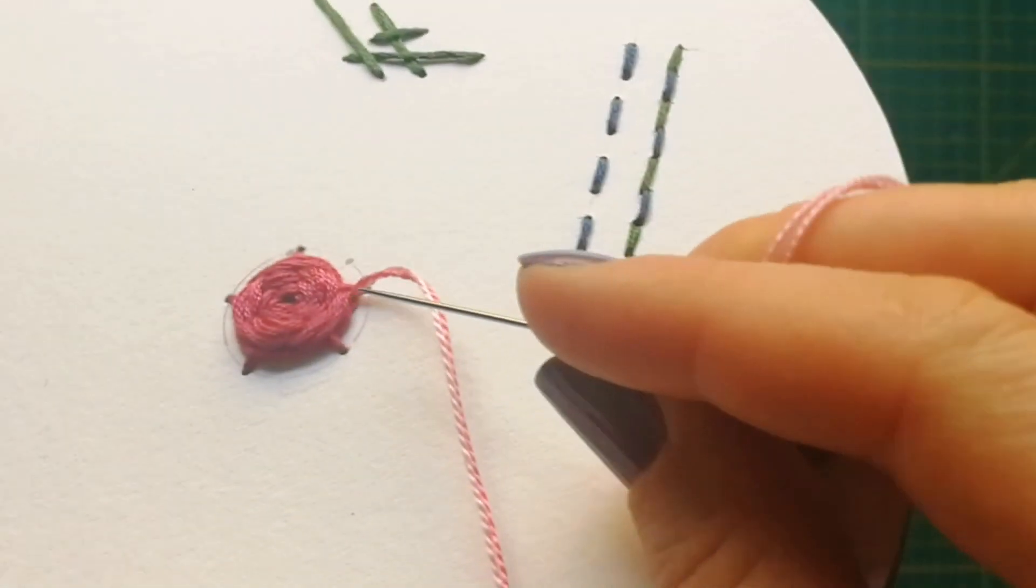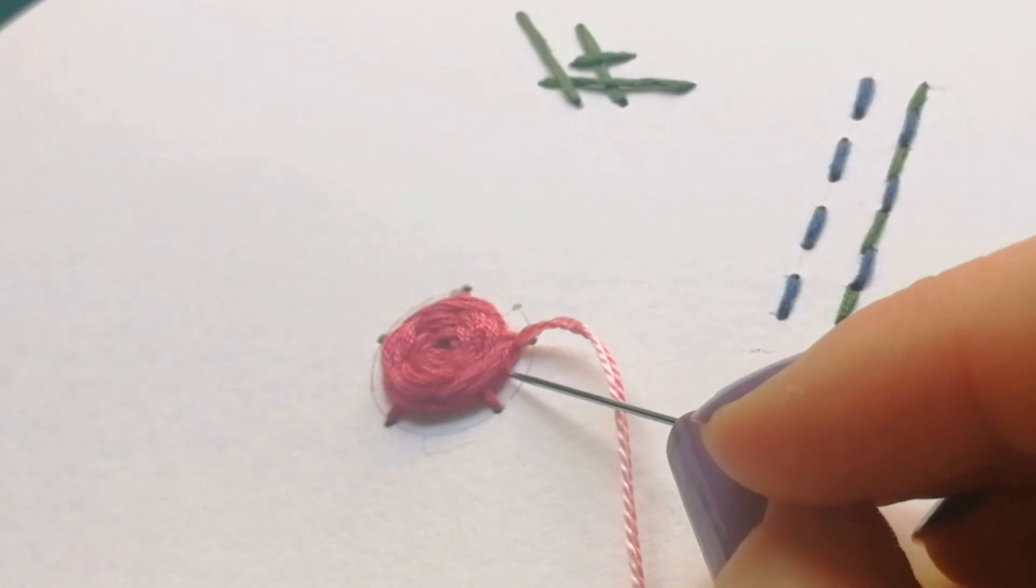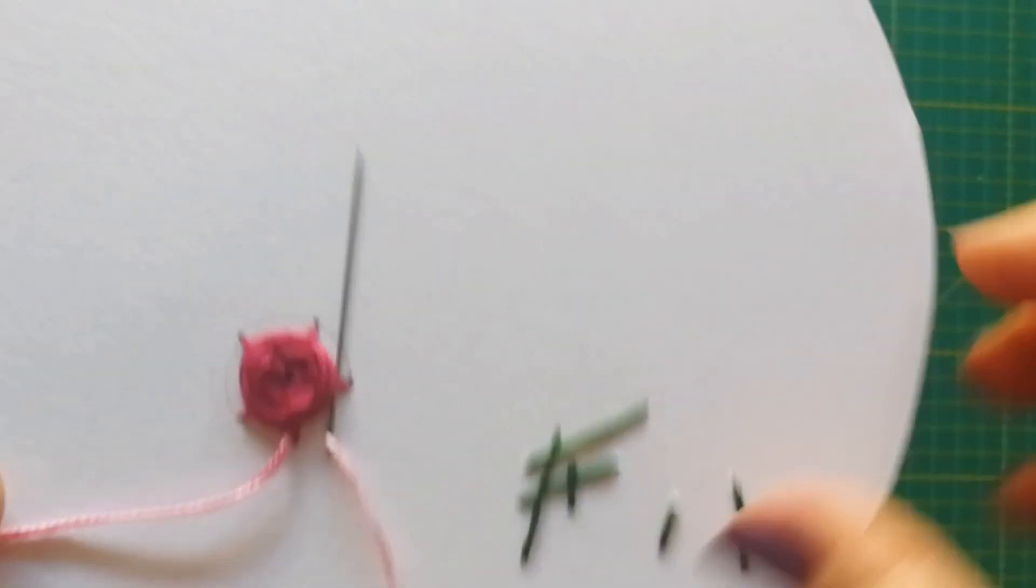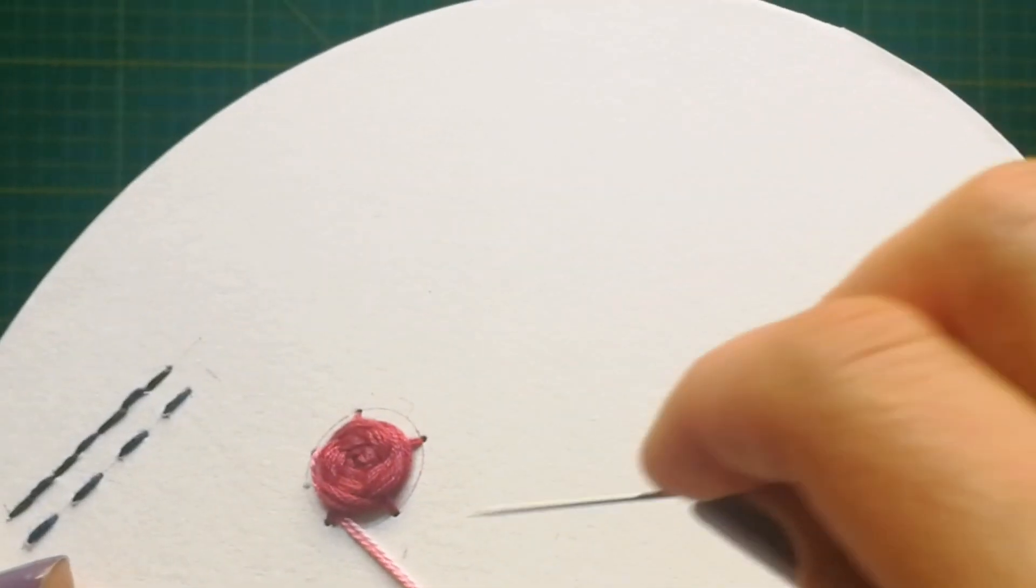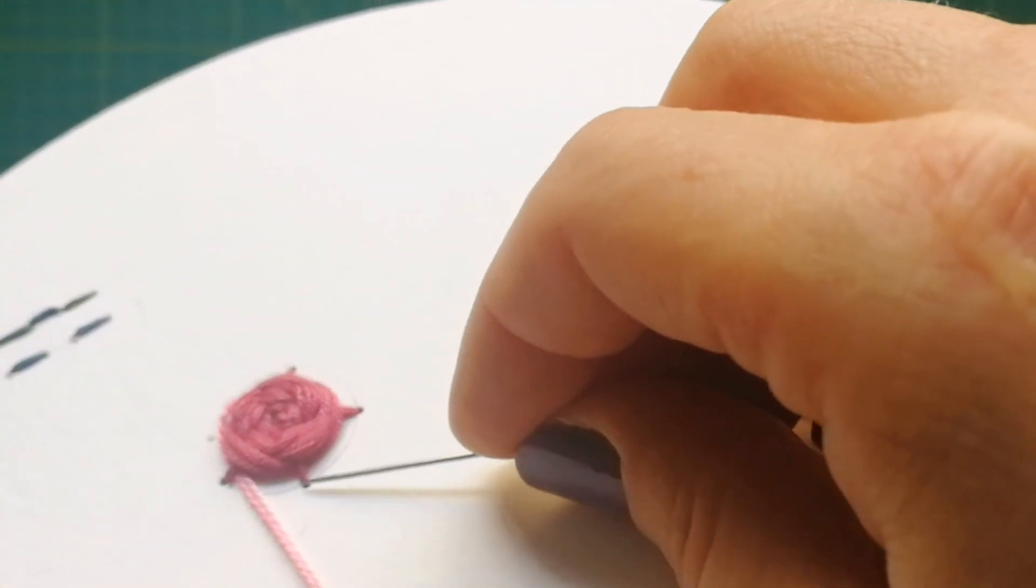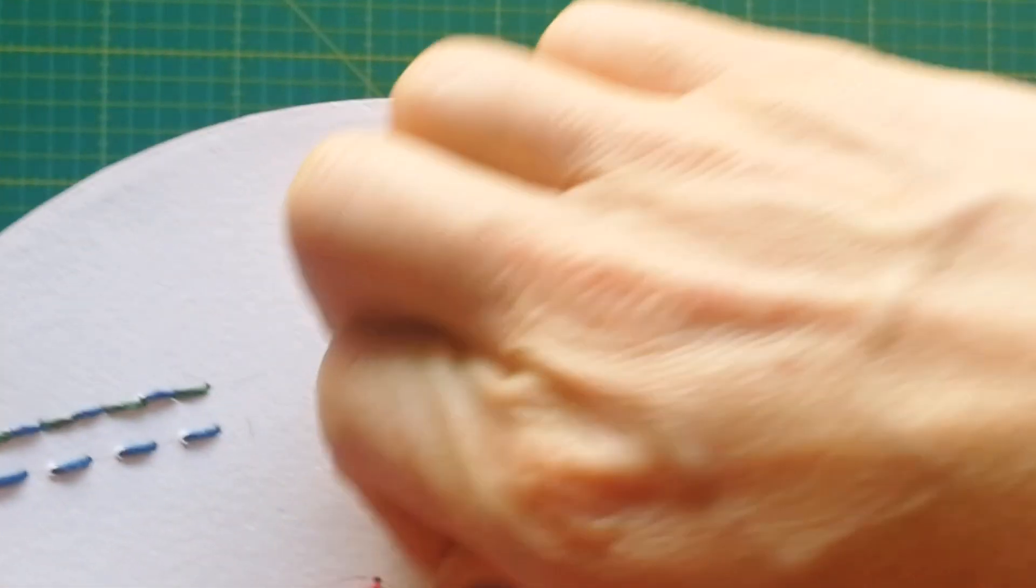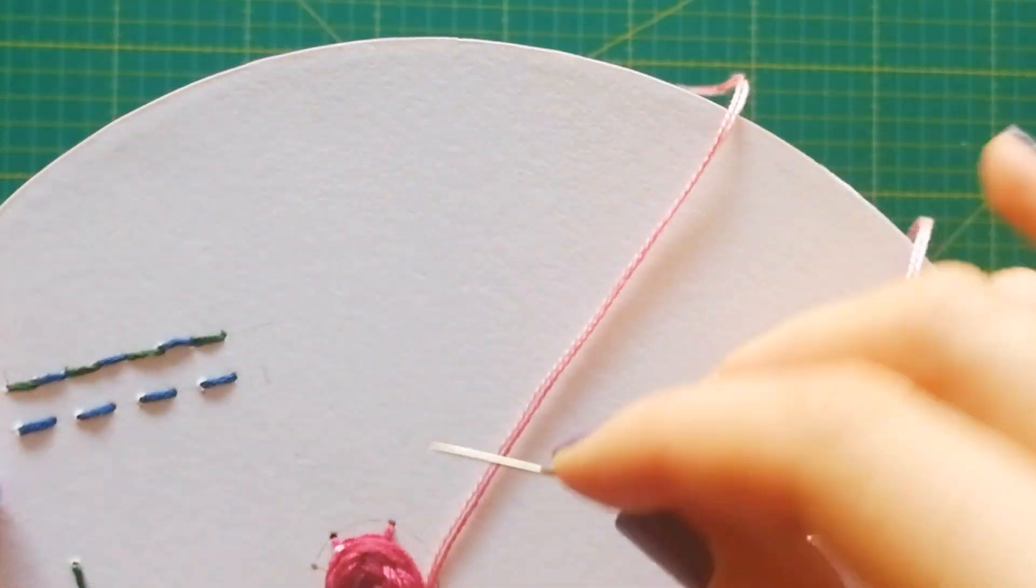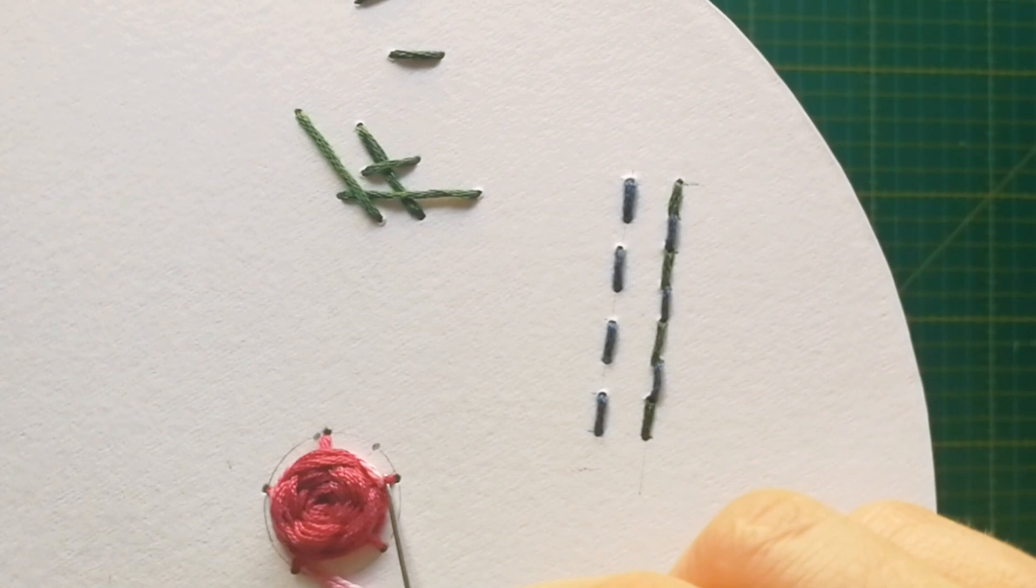And I have also checked here. You see that I went here under, so here I need to go above and under so that I stay with the pattern. And here it is. We went under, so now we need to go above. And I am just adding more volume to my flower.